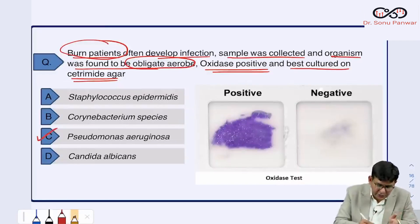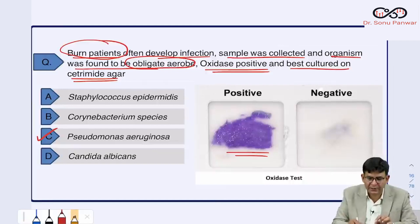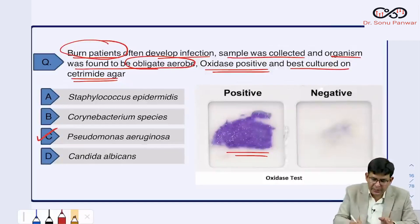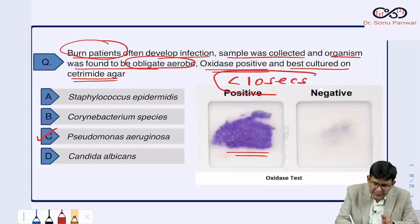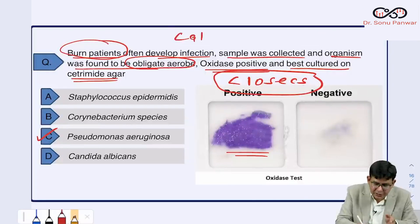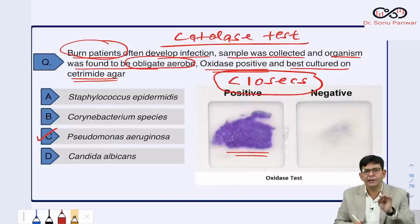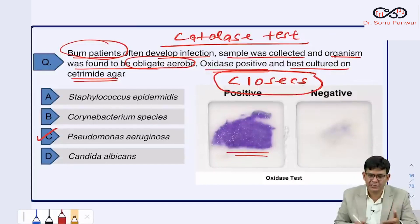The oxidase test involves a disc or paper that changes color from white to blue, and this must happen within 10 seconds. The catalase test uses 3% H₂O₂ — be careful not to confuse the two. Pseudomonas is found to be both catalase positive and oxidase positive.